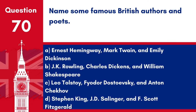Question 70. Name some famous British authors and poets. A. Ernest Hemingway, Mark Twain and Emily Dickinson. B. J.K. Rowling, Charles Dickens and William Shakespeare. C. Leo Tolstoy, Fyodor Dostoevsky and Anton Chekhov. D. Stephen King, J.D. Salinger and F. Scott Fitzgerald. Answer: B. J.K. Rowling, Charles Dickens and William Shakespeare. Famous British authors and poets include J.K. Rowling, Charles Dickens and William Shakespeare.